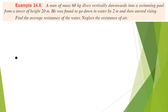Second example: a man of mass 60 kg dives vertically downward into a swimming pool from a tower of height 20 meters. He travels 2 meters down through the water before stopping and rising. Find the average resistance of the water, neglecting air resistance. This problem has two stages: Stage 1 is the 20-meter fall through air, where only weight acts on the body.